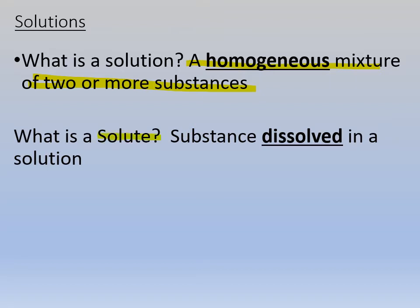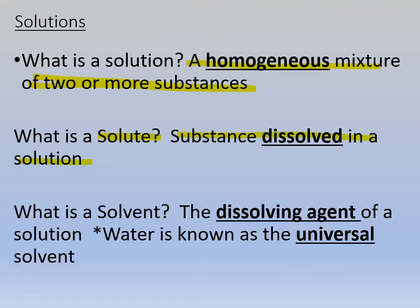A solution has a solute, which is the substance that gets dissolved in the solution, and a solvent, which is the thing that does the dissolving. Most of the time, our solvent is water. Water is known as the universal solvent. Water does not dissolve everything, but it dissolves a lot of things. Every solution has a solute and a solvent — the solute gets dissolved, and the solvent does the dissolving. Usually it's water.